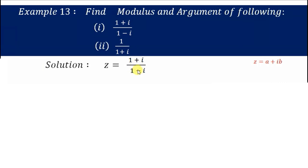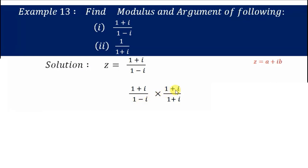To rationalize, we divide and multiply with the conjugate of the denominator. That is, for (1+i)/(1-i), we multiply by the conjugate of the denominator, which is (1+i)/(1+i).